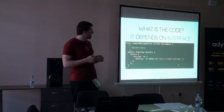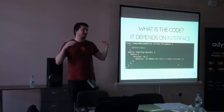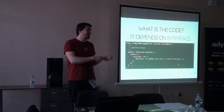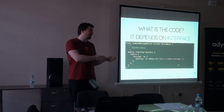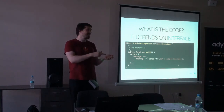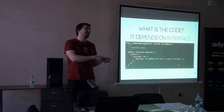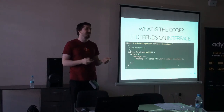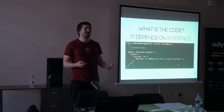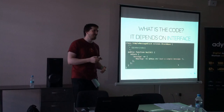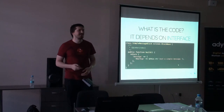Тема ограничена четырьмя вещами: как делать плагины, что такое деривативы, плагин-менеджер и поиск плагинов. Это реально четыре вещи, которые есть, — они вот все закончены. Это самое любимое моё API из Drupal 8 после миграции.